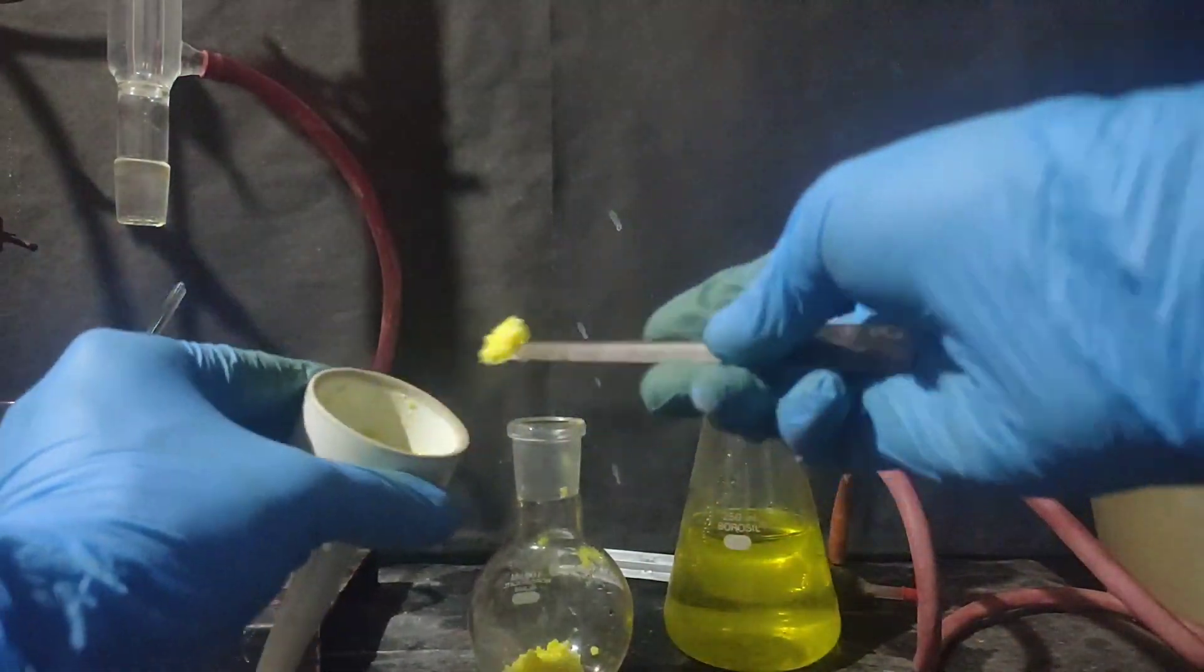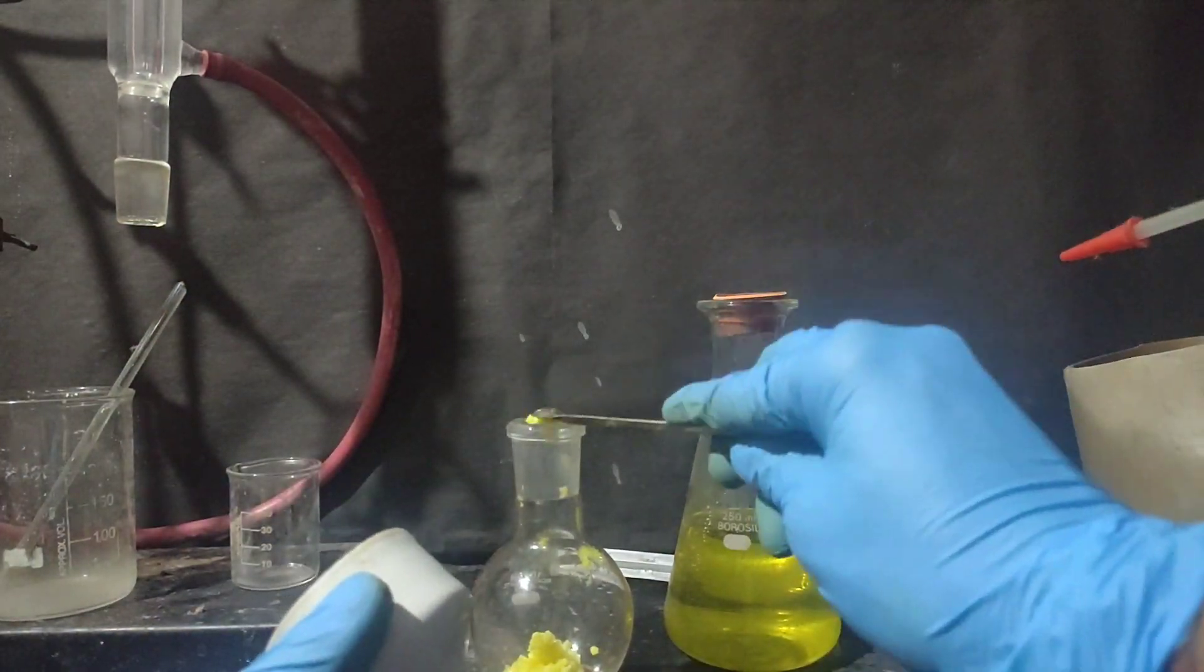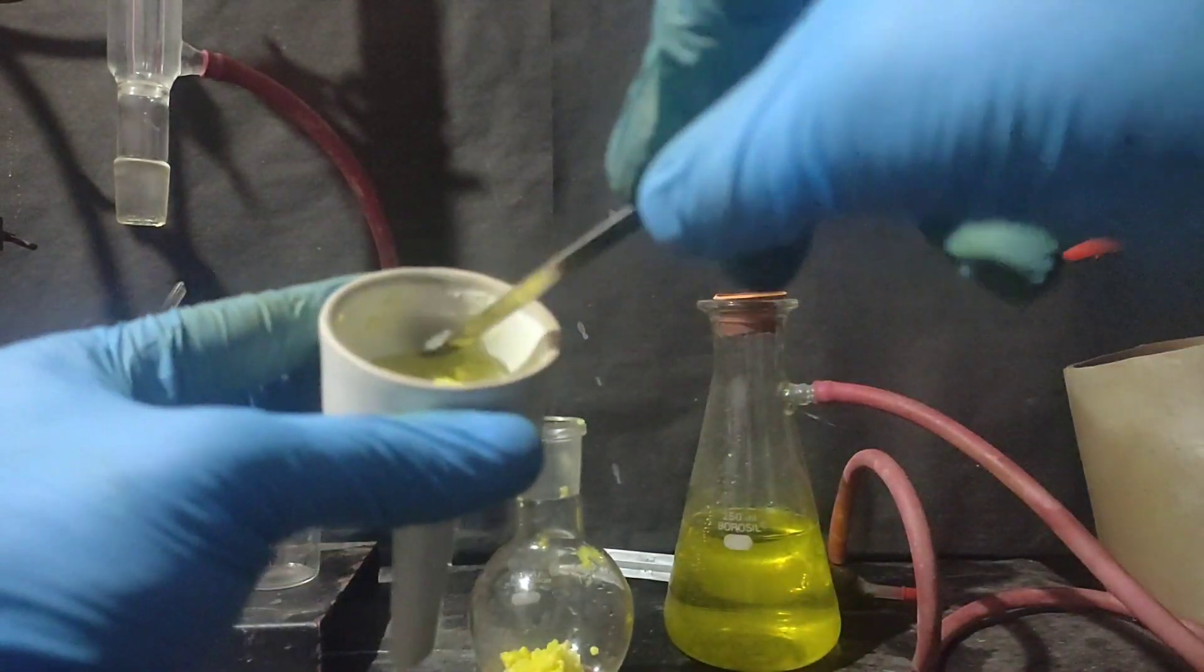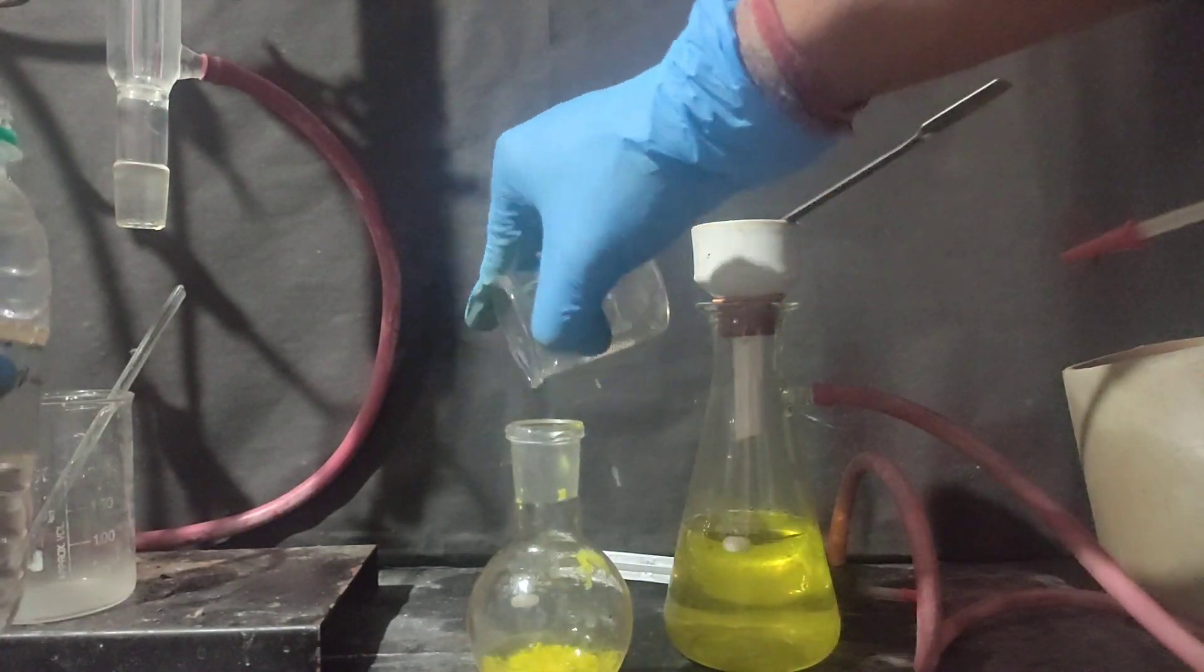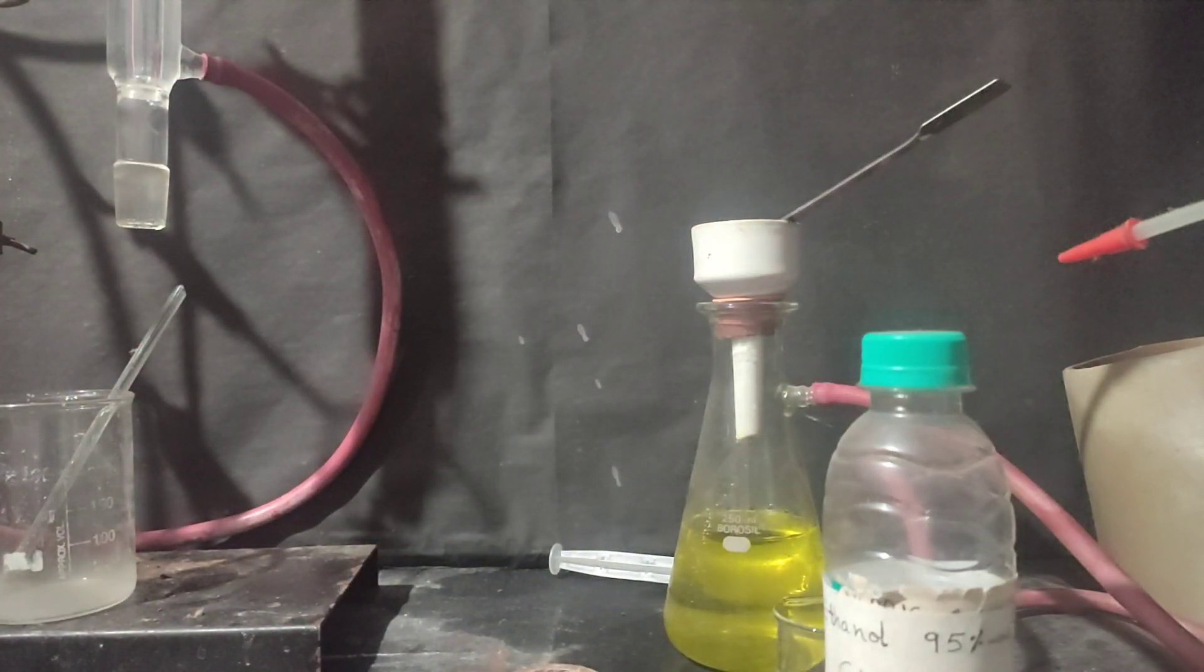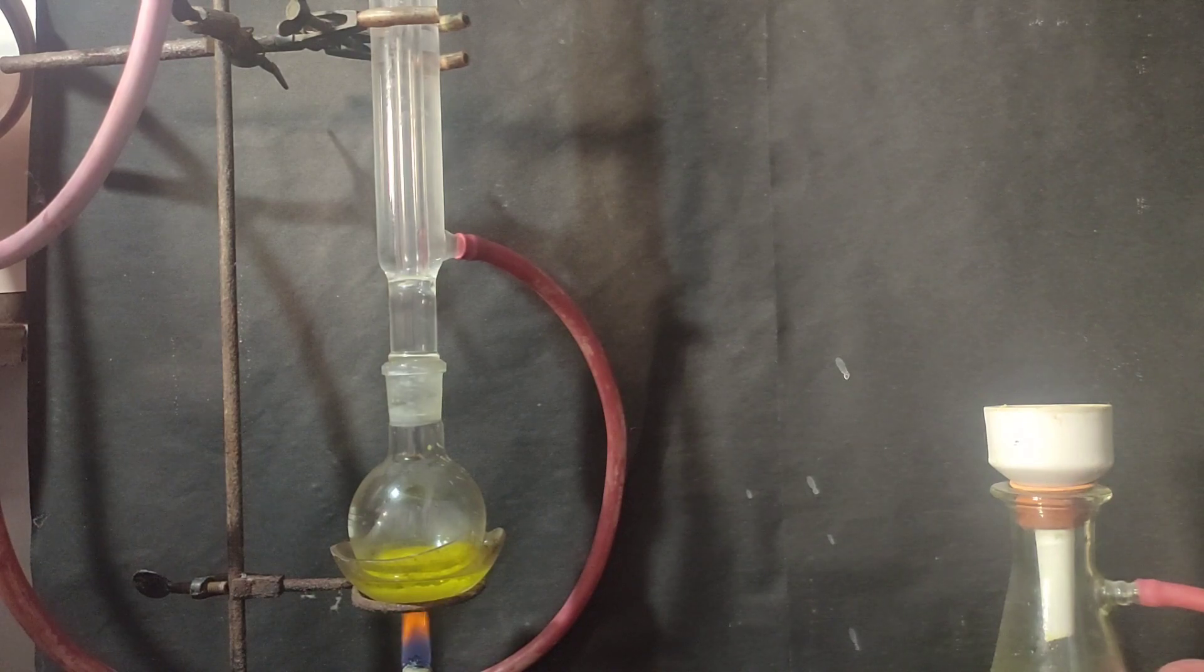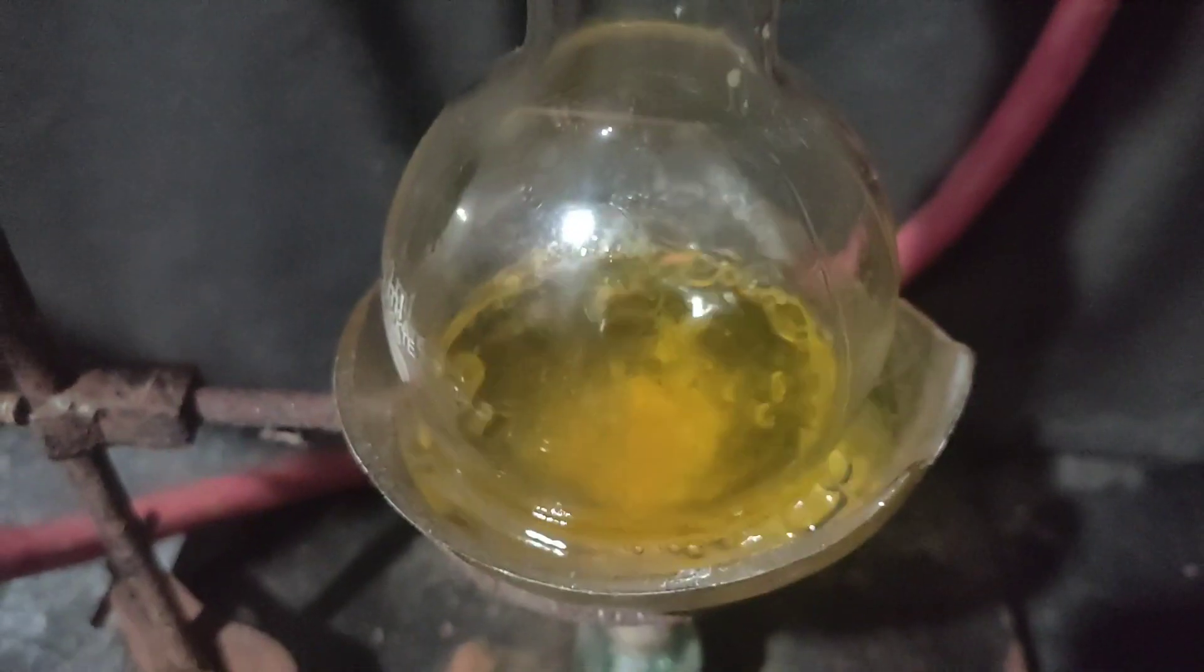I am transferring the crude meta-dinitrobenzene into a 100 ml round bottom flask. To it, I added around 20 ml of 95% ethanol. And the flask was heated on a water bath with a condenser on the top.